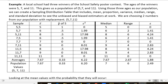So a local school had three winners of a school safety poster contest. The ages of the winners are 5, 7, and 11, and that gives us a population of 5, 7, and 11. Using those three ages as our population, we can create a sampling distribution table that includes all those things I just mentioned.